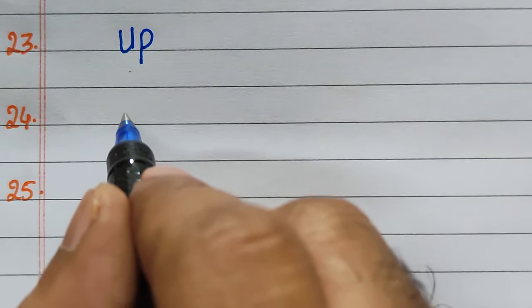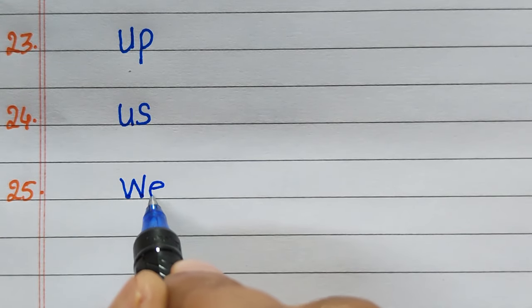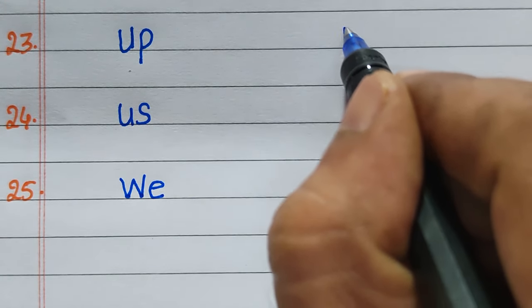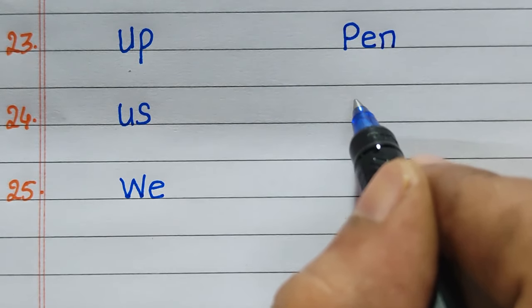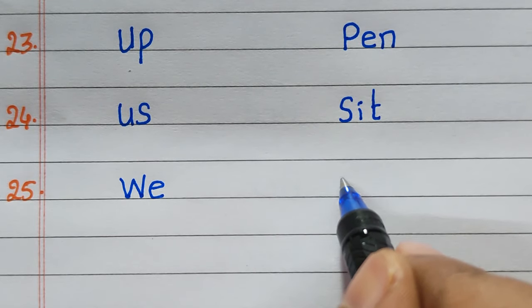Twenty-third, UP. Twenty-fourth, US. Twenty-fifth, WE. Whereas the three-letter words are pen, sit, and win.